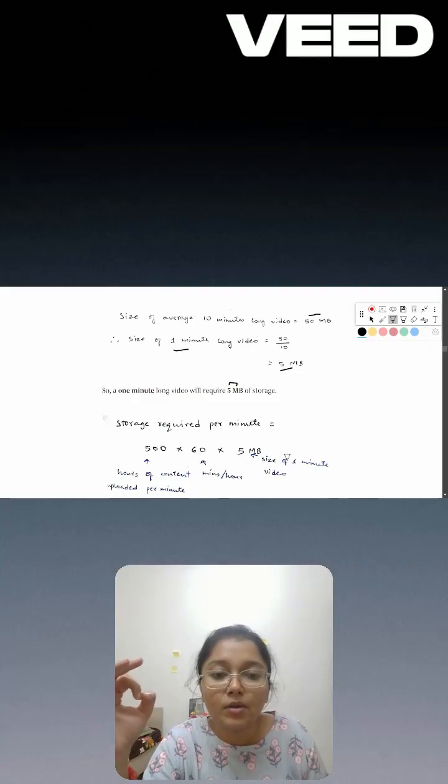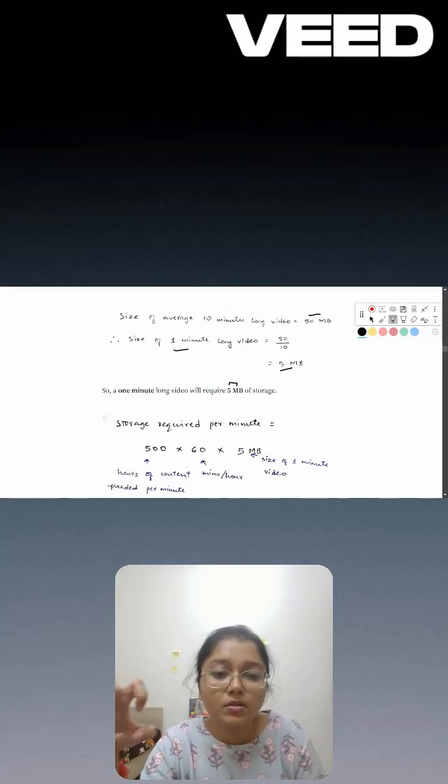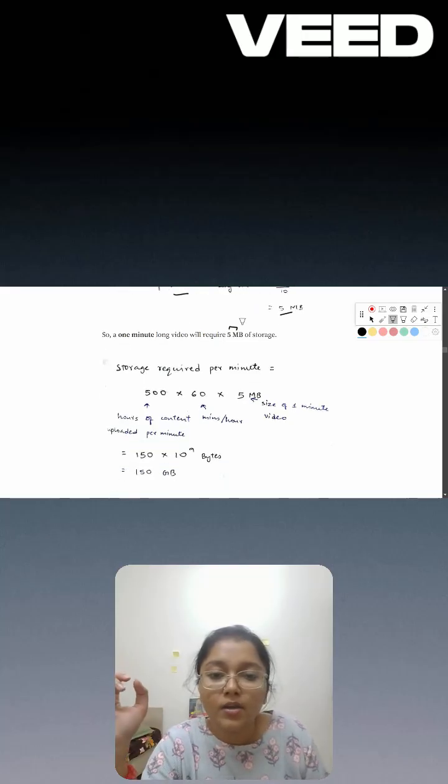This is going to give me, in a minute, how much storage is required. That is why I'm multiplying by 60. So here when we do that, we are getting 150 GB.